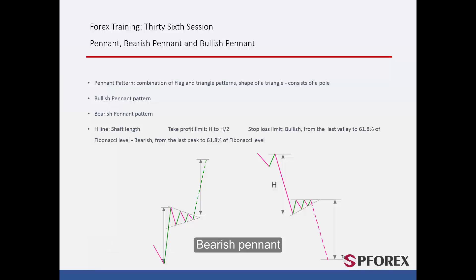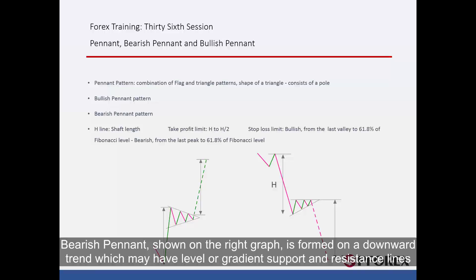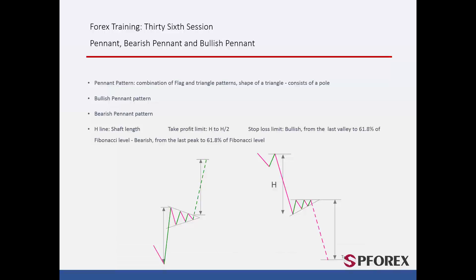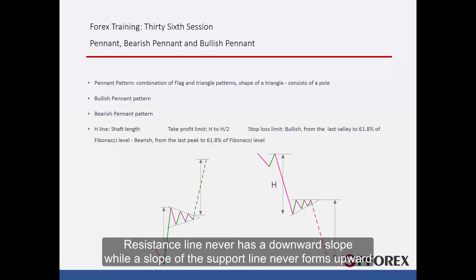Bearish Pennant, shown on the right graph, is formed on a downward trend which may have level or gradient support and resistance lines. The resistance line never has a downward slope while a slope at the support line never forms upwards.